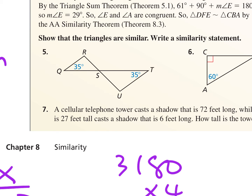For number 5, you have to show that two triangles are similar and, if they are, write a similarity statement. On the test tomorrow, you'll also have to explain — your explanation is the shortcut you used. I can show that angle Q is congruent to angle T because they're both 35 degrees. And then I also have a pair of vertical angles. Because I can show two pairs of congruent angles, I can say yes, these are similar, by the angle-angle similarity theorem.